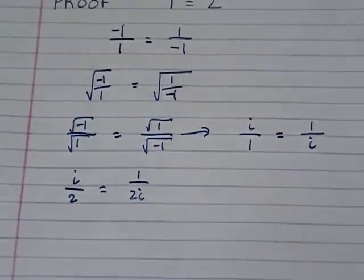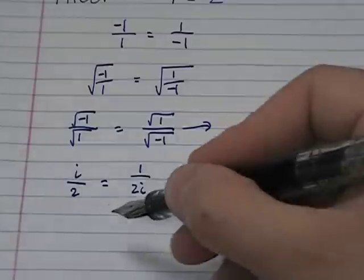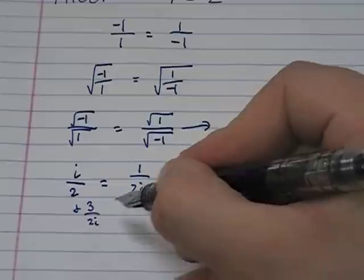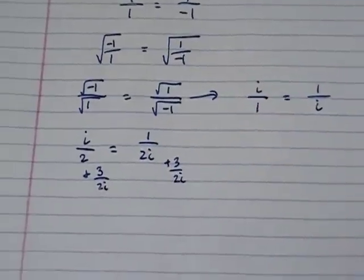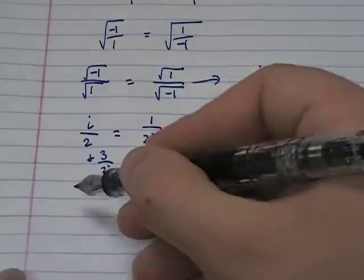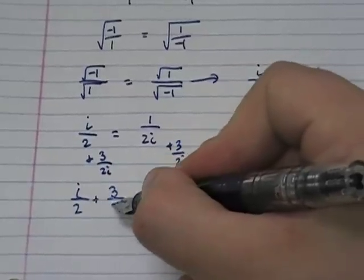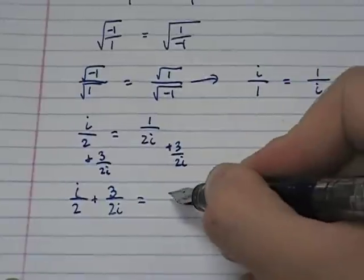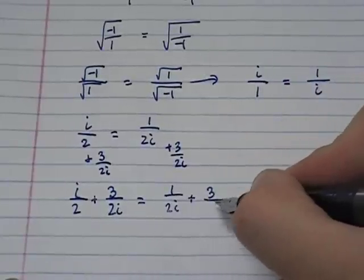Now the next thing I want to do is add 3/2, or 3/(2i) to both sides. So to both sides, I'm going to add 3/(2i). And as I do that, I'm going to end up with i/2 + 3/(2i) = 1/(2i) + 3/(2i).